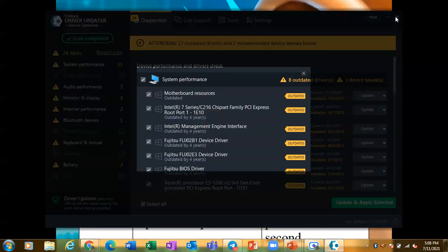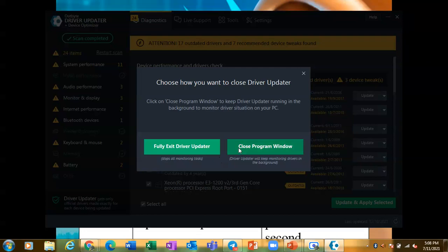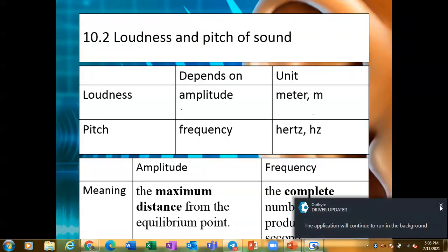In 10.2 you are going to learn about the loudness and pitch of sound. These are two different things. Loudness depends on the amplitude, and the unit for amplitude is in meter, usually meter m. Pitch depends on the frequency and the unit is hertz or Hz.